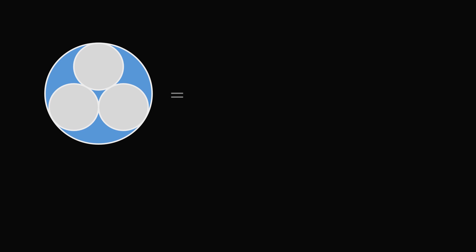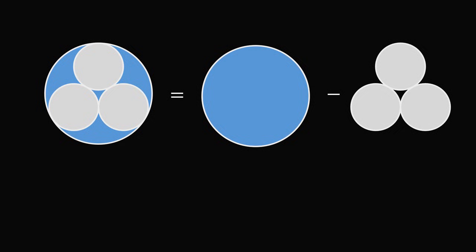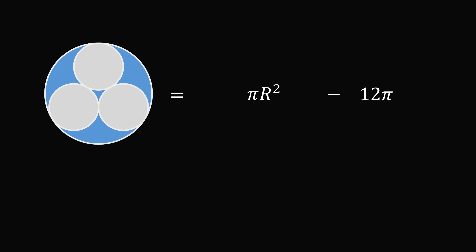This will be equal to the area of the large circle minus the areas of the three small circles. Let's suppose we knew the radius of the large circle is equal to r. Then its area would be equal to pi r squared. We know the radius of each of the small circles is equal to 2, so we want to subtract out 3 times pi times 2 squared. This simplifies to 12 pi. So we have pi r squared minus 12 pi. But what's the radius of the large circle?